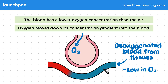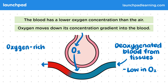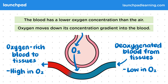Because of this, the oxygen is going to diffuse from the alveoli into the blood, down the concentration gradient. This changes the deoxygenated blood from the tissues into oxygen-rich blood that can then go back to the tissues. This blood is high in oxygen, ready to be used for respiration.